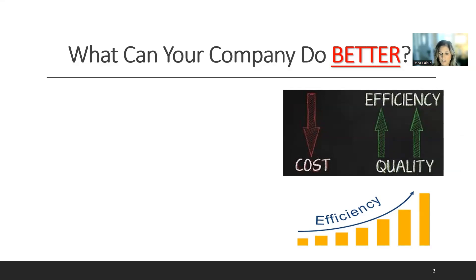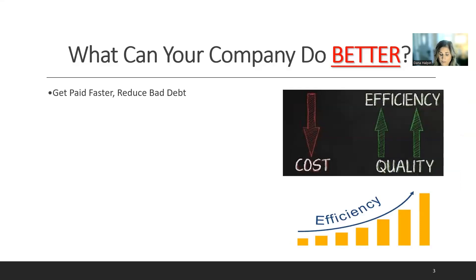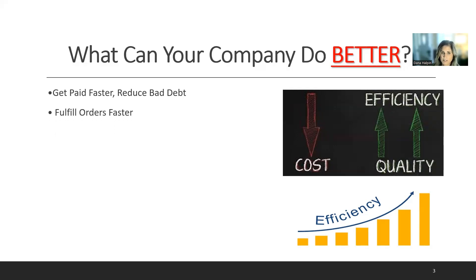Let's discuss what your company can do better. Every company has some areas in common. Get paid faster, reduce bad debt — it would be nice to reach out to customers sooner to reduce bad debt. Also, fulfilling orders faster, knowing promise dates, when your inventory comes in to be able to fulfill orders — all of that is pertinent information to be efficient.